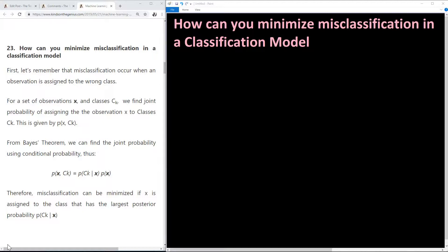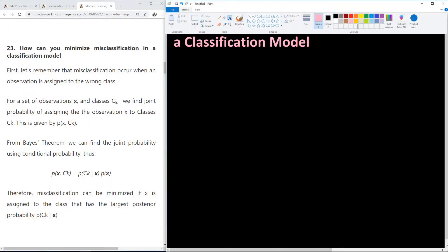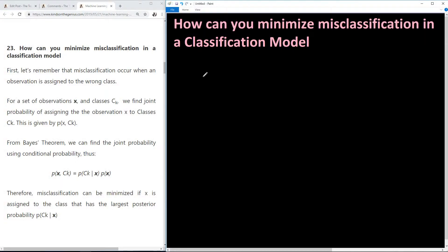Remember my objective is for you to learn the concepts. So let's get started by explaining this question and then give the answer. First, let's remember that misclassification occurs when an observation is assigned to the wrong class.